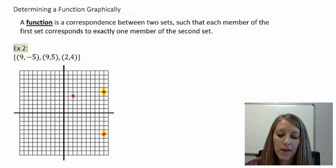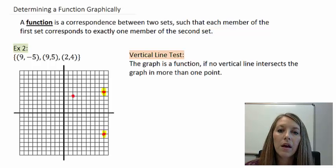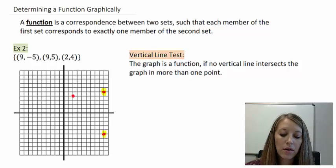So the way that we do that is we use what's called the vertical line test. Basically, it's saying if you can draw a vertical line through any part of the graph and it intersects the graph more than once, then that graph is not a function.